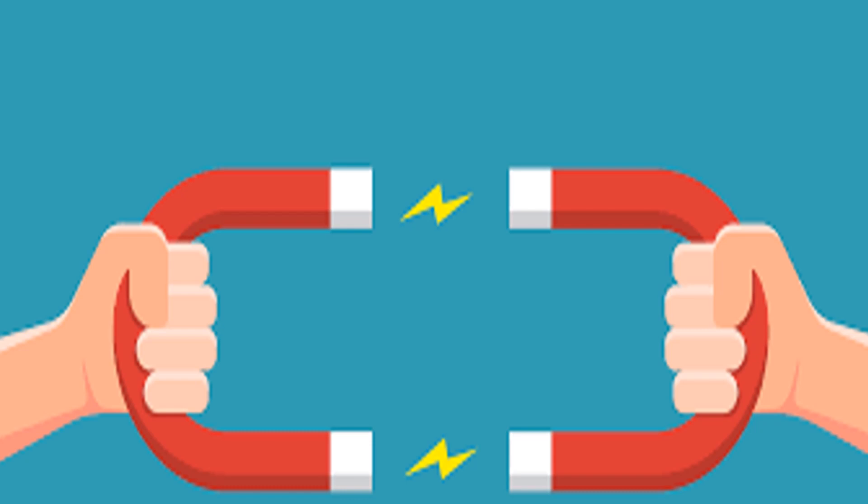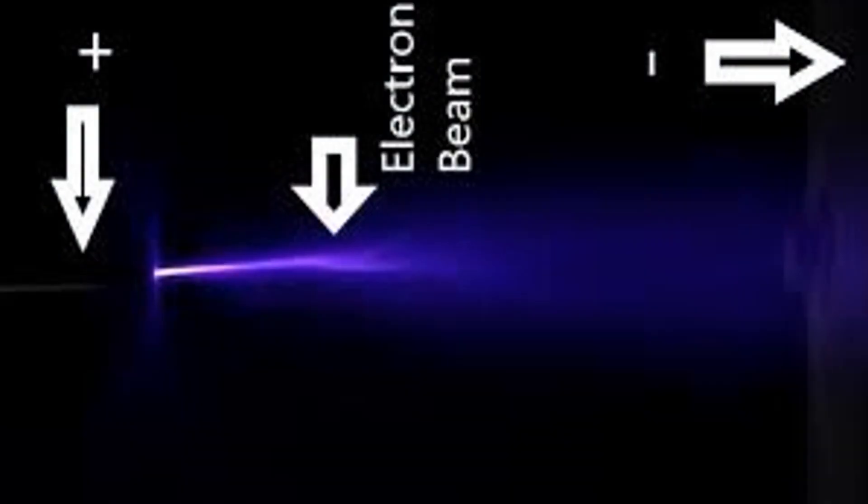In Thomson's experiment, he noticed a red beam traveling from the cathode of the tube towards the anode. When he subjected this beam to an electric field, it deflected towards the positive plates, indicating that this beam was negatively charged.